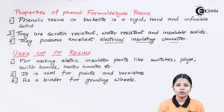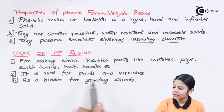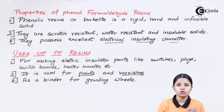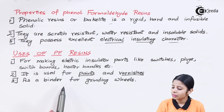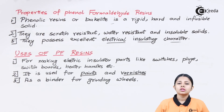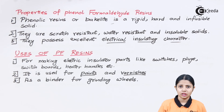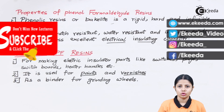The uses of phenol formaldehyde resin: First, it is used for making electrical insulating parts such as switches, plugs, switchboards, and heater handles. Your switch is made of Bakelite — it never disintegrates or perishes, and you generally never get shocks from it because it is a very good insulator. Second, it is used as a component of paints and varnishes. Third, it is used as a grinder for grinding wheels. In today's session we studied phenol formaldehyde resin (Bakelite), its three manufacturing steps, its properties, and its uses.